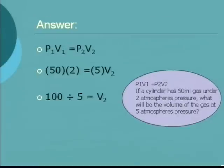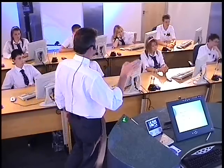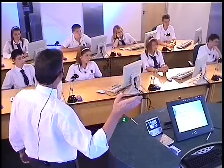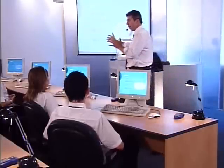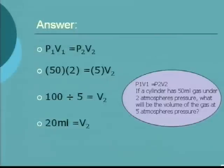Can anyone tell me what the volume is for V2 when pressure increases to 5 atmospheres? Chris — 20. And 20 is absolutely right. What's the unit? Richard — millilitres. Fantastic. Once the pressure increases to 5 atmospheres, the volume becomes 20 millilitres. Applying that back to our bicycle pump concept: increasing pressure reduces volume, but we still have the same amount of gas at a much higher pressure.